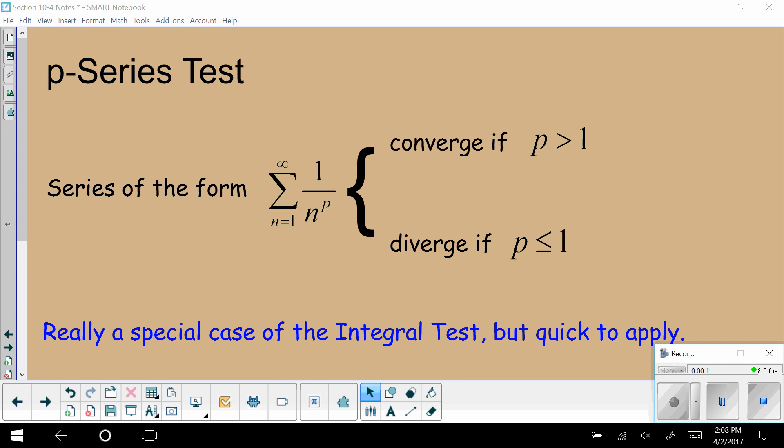For these, our series have to be in a very specific form. If we have a series going from 1 to infinity, and it's a rational expression that is our general term, what we're looking for here is that we have a constant with a numerator, and then our denominator is n to a power.